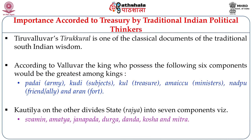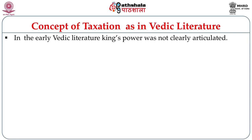Kautilya divides the state in the famous Saptanga theory into seven components: Swami, Amatya, Janapada, Durga, Danda, Kosha and Mitra, where Kosha is also treasury. So in both cases, Thiruvaluvar and Kautilya have considered treasure and treasury to be a very important aspect of the state.